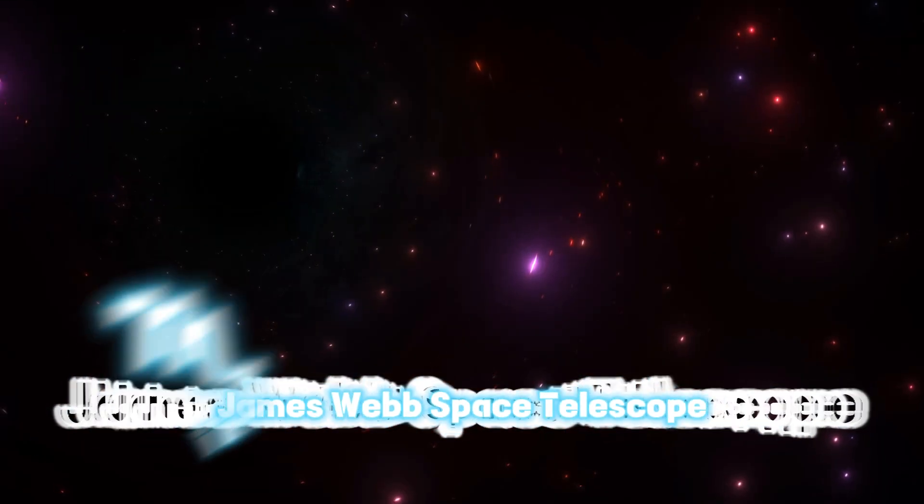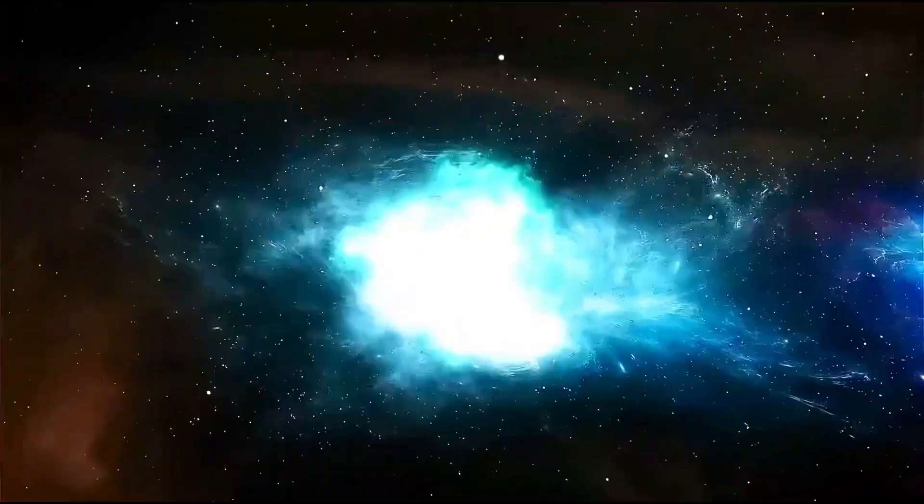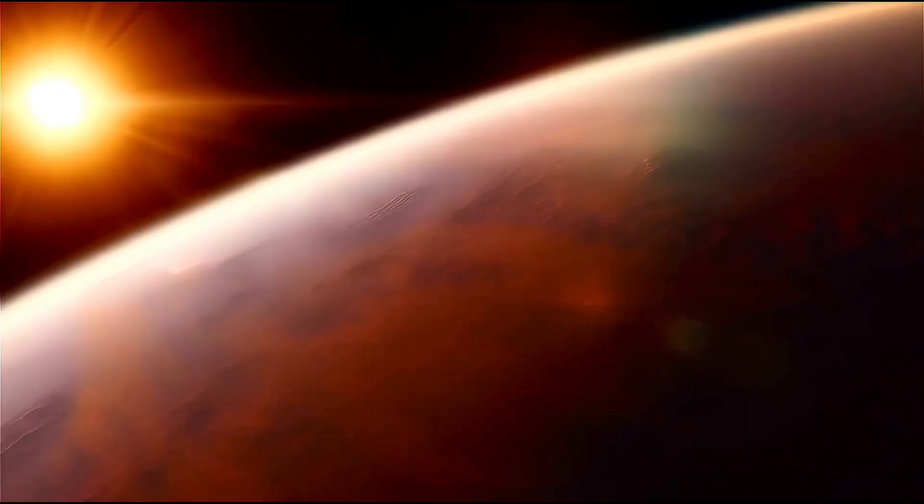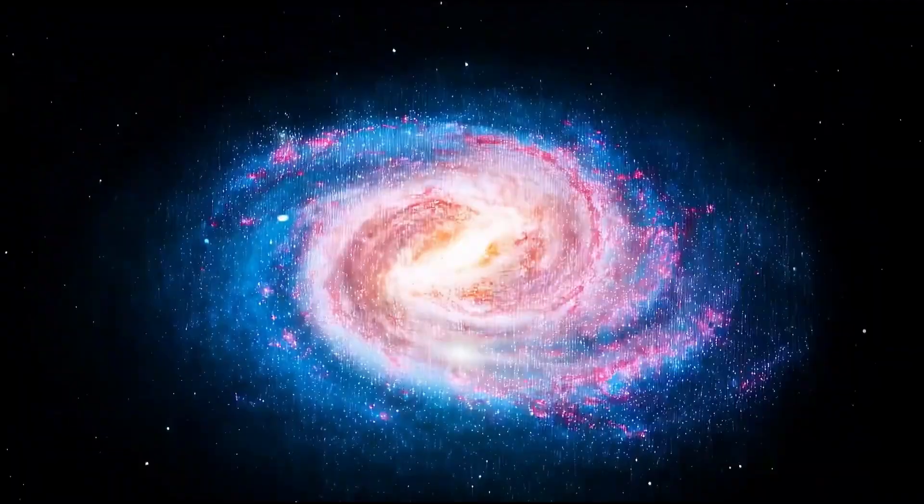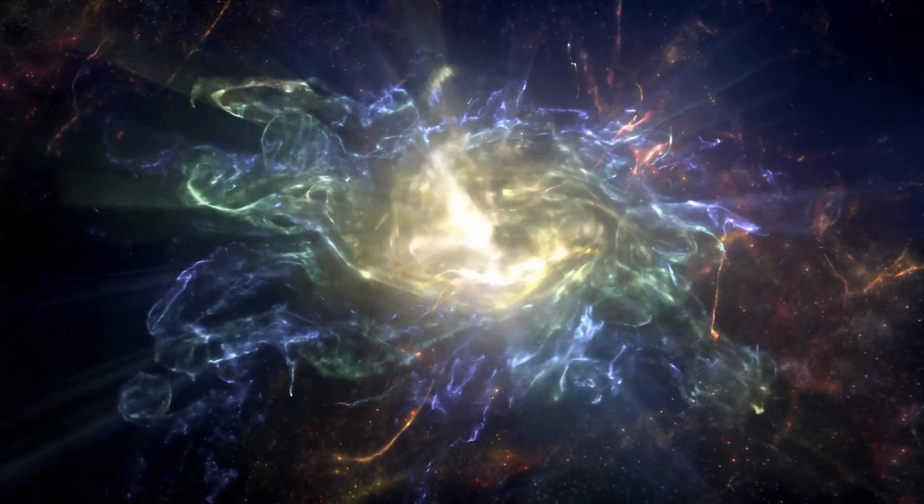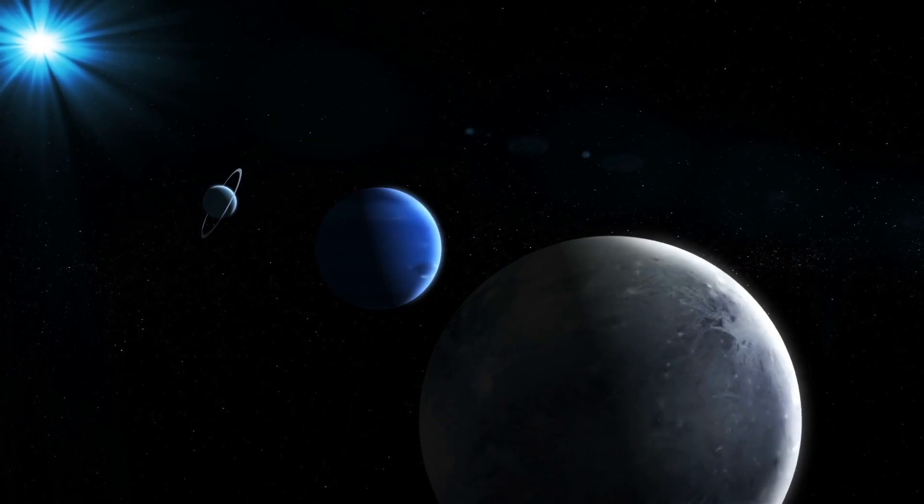Recently, James Webb revealed that over 771 trillion solar systems have suddenly vanished from our universe. This means that over 771 trillion stars and their associated planets have disappeared.